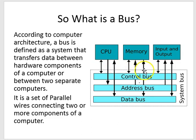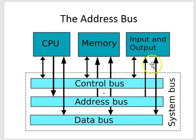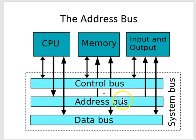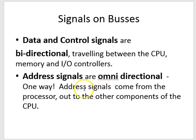Looking at this diagram: the address bus line from the CPU is single — one direction going into memory and one direction going to the input/output. On the control bus, the lines from the CPU are bi-directional — going two ways into memory and two ways into input/output. The data bus is also two ways — into the CPU, into memory, and into input/output. So the address bus is what we call uni-directional, while the data and control signals are bi-directional.